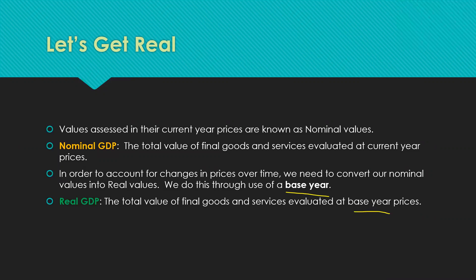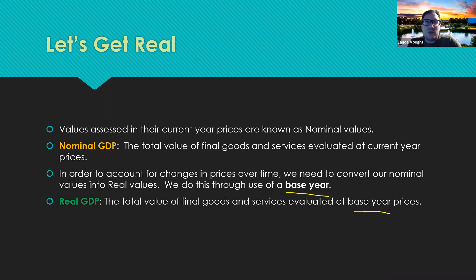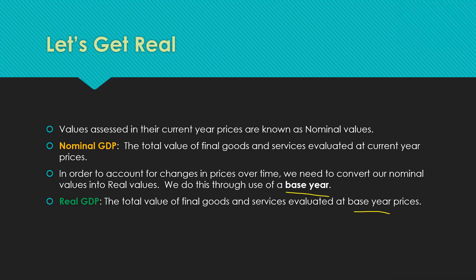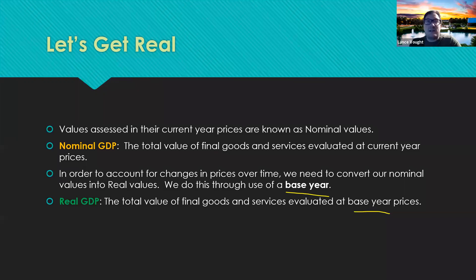A student asks: for real GDP, if we're calculating for 2001 and 2012 with a base year of 2001, we use the quantities from each year but the prices from 2001? Correct. For nominal GDP, you use each respective year's prices — 2001 quantities at 2001 prices, 2012 quantities at 2012 prices. For real GDP, you take the base year prices and apply them to the current year's quantities, because GDP is the value of final goods and services, and you need a consistent price to compare production across years.